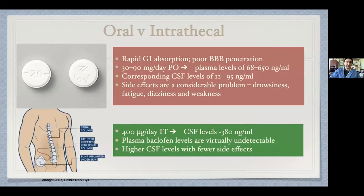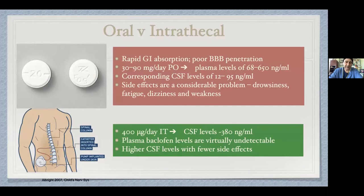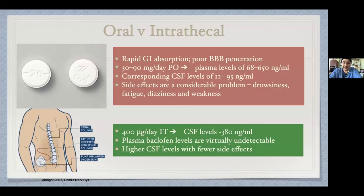I've searched long and hard for why intrathecal baclofen — put right into the central nervous system at much higher levels — somehow has fewer CNS effects. The answer is I have no idea, but it does. Oral baclofen is rapidly absorbed but doesn't cross the blood-brain barrier very well. Thirty to 90 milligrams per day PO results in highly variable plasma levels of 68 to 650 nanograms, with corresponding CSF levels of only 12 to 95 nanograms per milliliter, and side effects of drowsiness, fatigue, dizziness, and weakness are a considerable problem. If you put it directly into the thecal space, 400 micrograms a day intrathecally yields CSF levels essentially 400 nanograms, plasma baclofen is virtually undetectable, and you get way higher CSF levels with way fewer side effects.